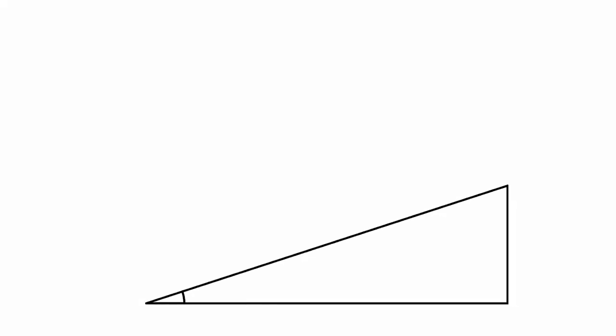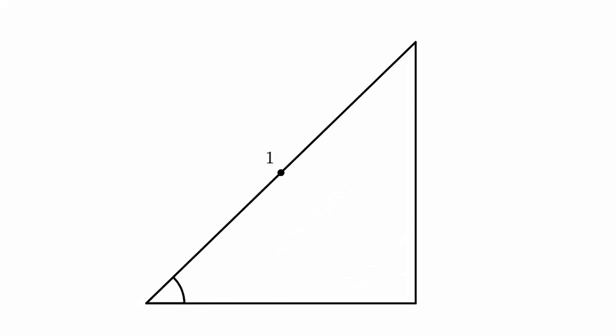Picture a right angle triangle with a fixed hypotenuse of one unit. We'll call the vertical side the opposite, since it's opposite to our angle, and the horizontal side the adjacent, since it's adjacent to our angle.